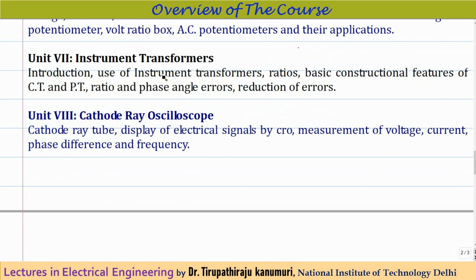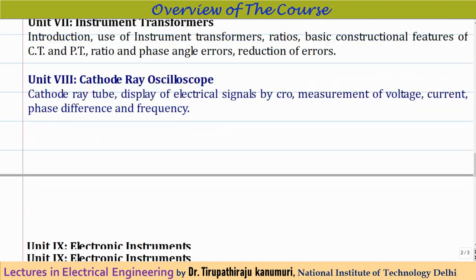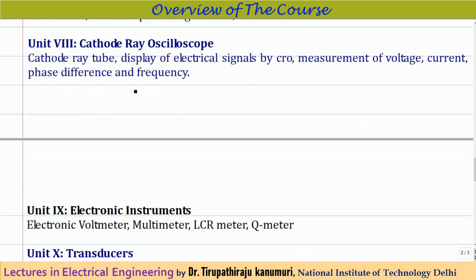Module 7 is instrument transformers. We will cover how instrument transformers are used, basic terminologies, and the different types — CT and PT — along with their errors and how to reduce them. This was already discussed in the transformers playlist, but here we will view it from the instrument point of view. If those lectures are already comprehensive, I will simply provide the link from the transformers playlist.